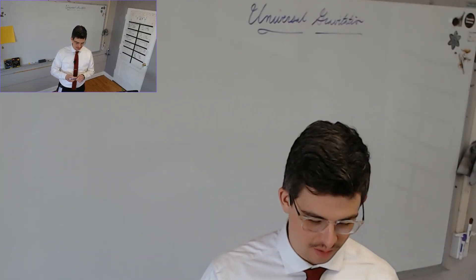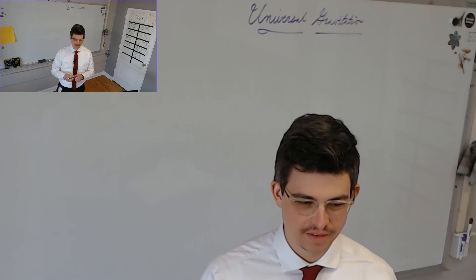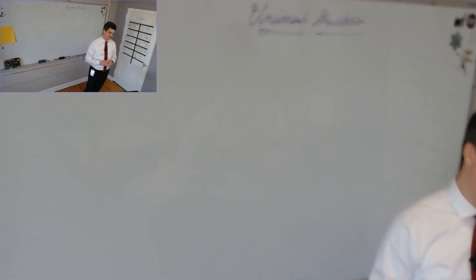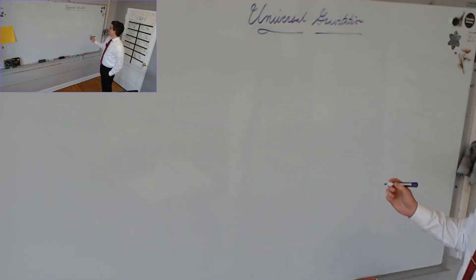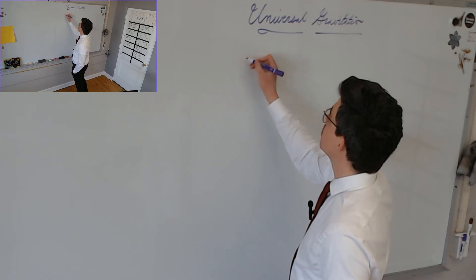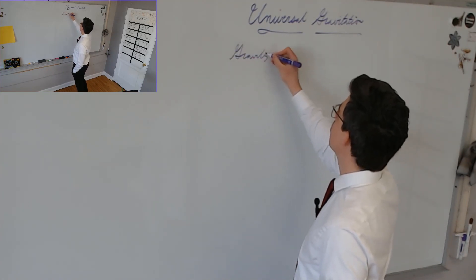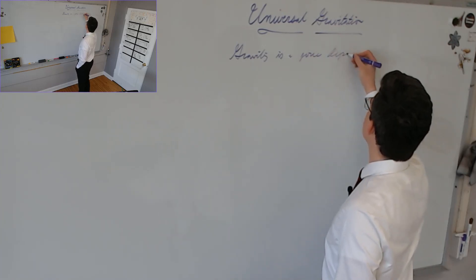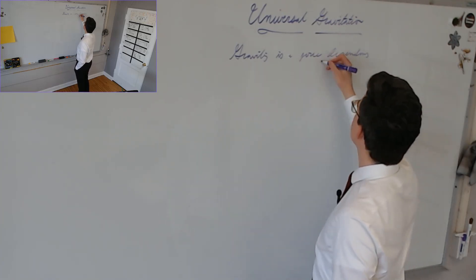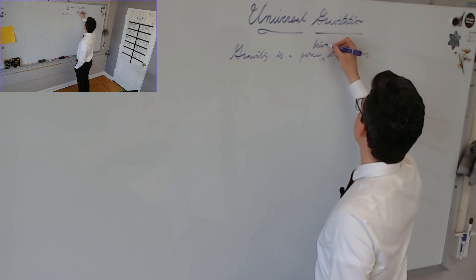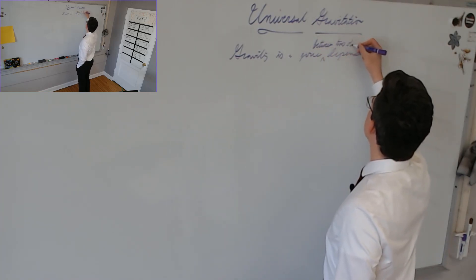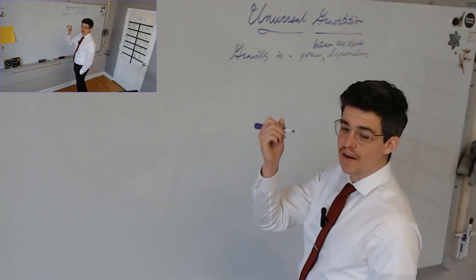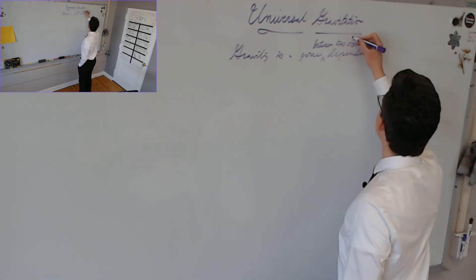You did a good job on your lab, right? So, gravity is exerted as a force. Gravity is a force between two objects. That's better — between two objects. Any two objects, as long as they have mass. So, we'll put massive objects.